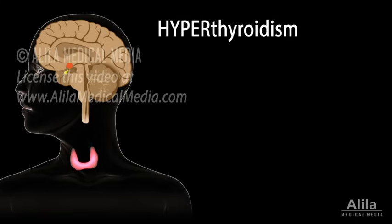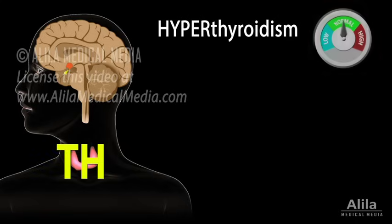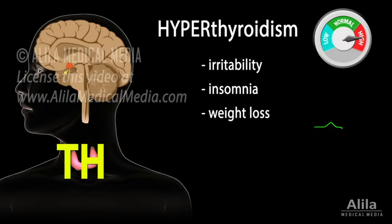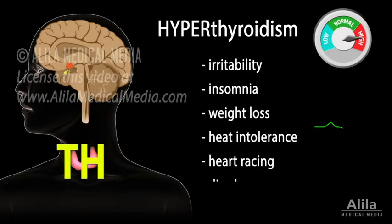Hyperthyroidism occurs when the thyroid gland produces too much hormones, resulting in a too active metabolism, together with respiratory and cardiovascular rates that are higher than necessary. Common symptoms include irritability, insomnia, weight loss despite good appetite, heat intolerance, heart racing, and diarrhea.